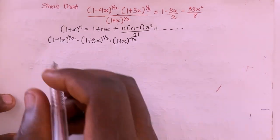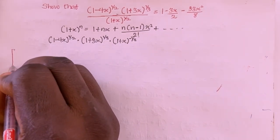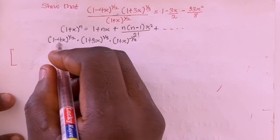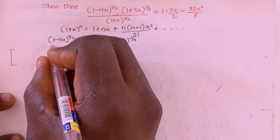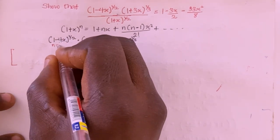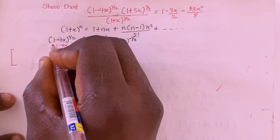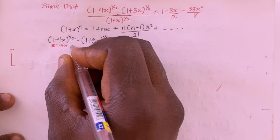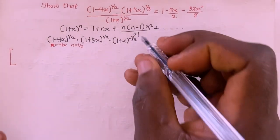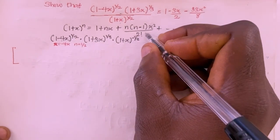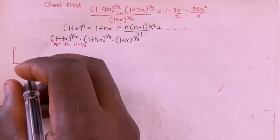Let me open a big parenthesis. For the first factor, the x-term is -4x and n equals 1/2. I'm going to substitute these into the binomial expansion formula.